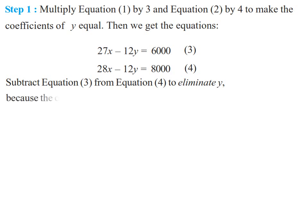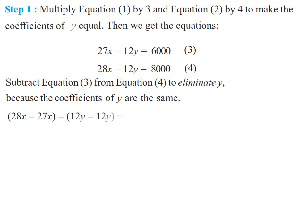We eliminate y because the coefficients of y are equal. If we had made the coefficient of x equal, we would eliminate x instead. Subtracting: 28x minus 27x gives x; 12y minus 12y gives 0; 8000 minus 6000 gives 2000. So x equals 2000. This is our value of x.